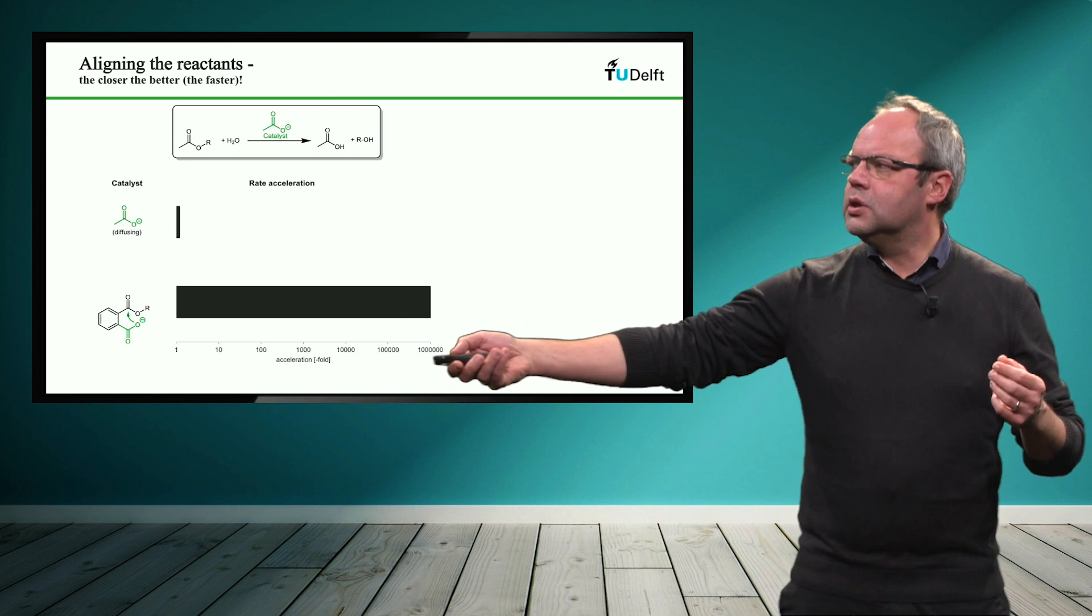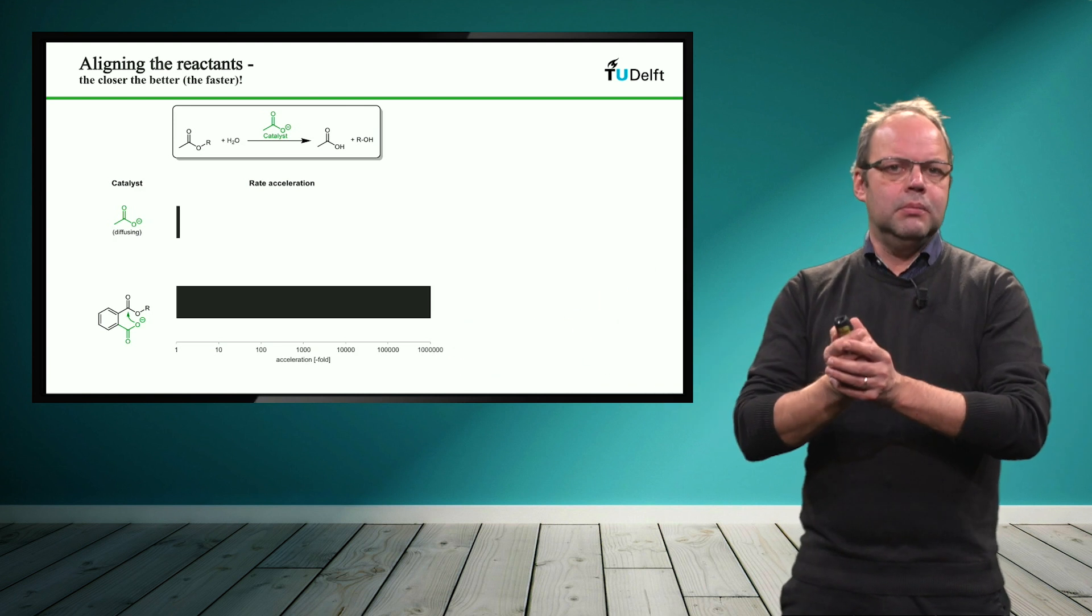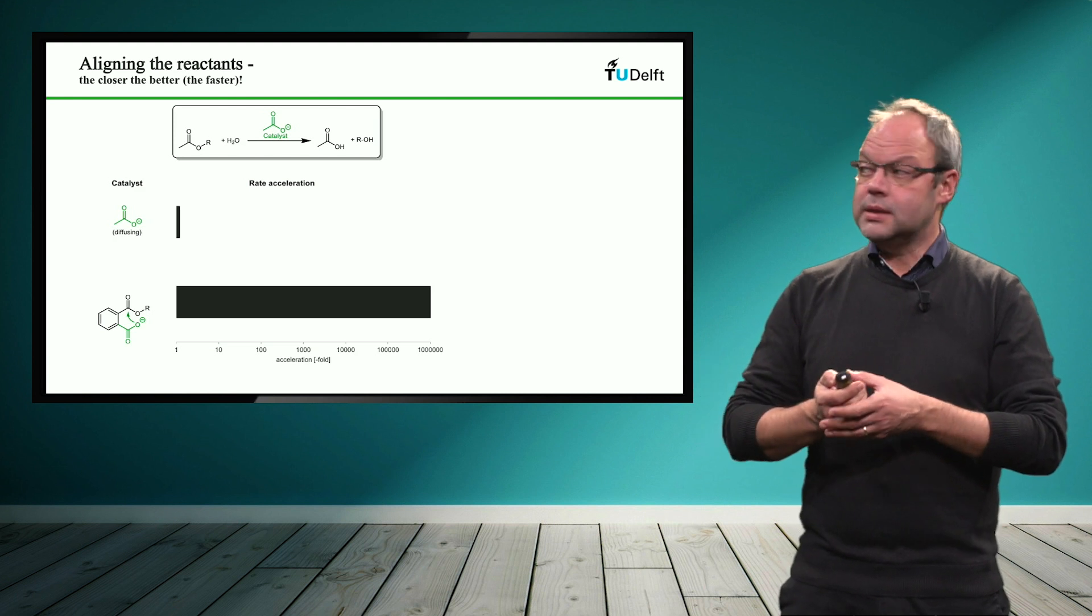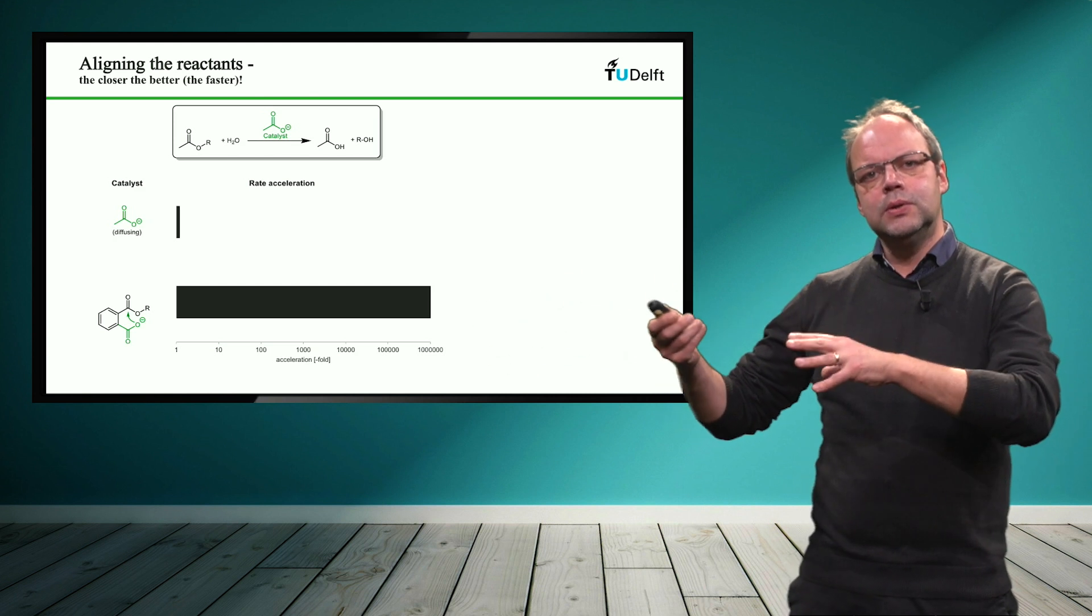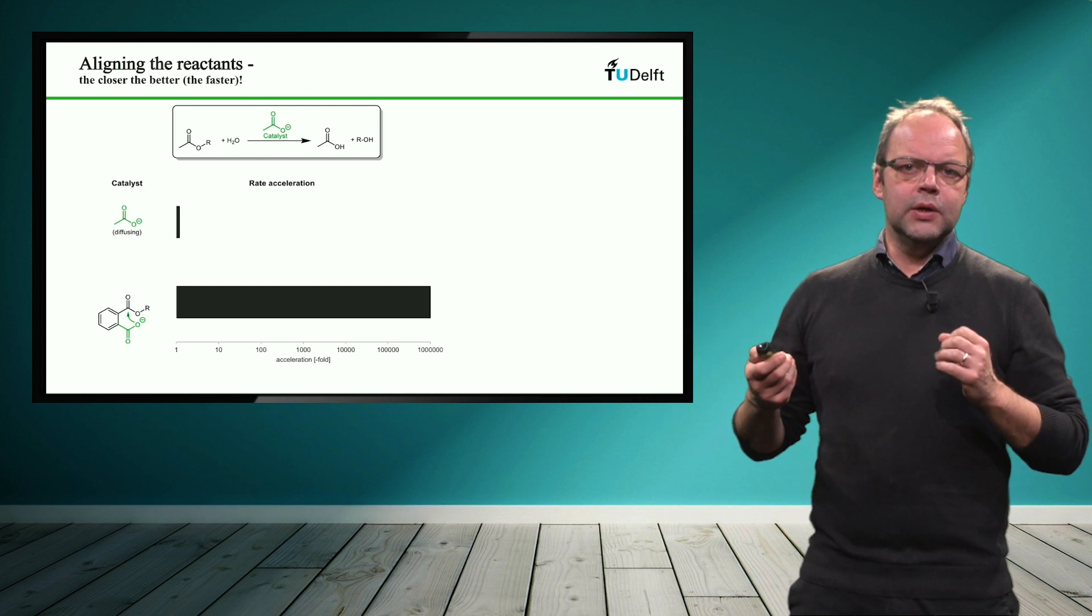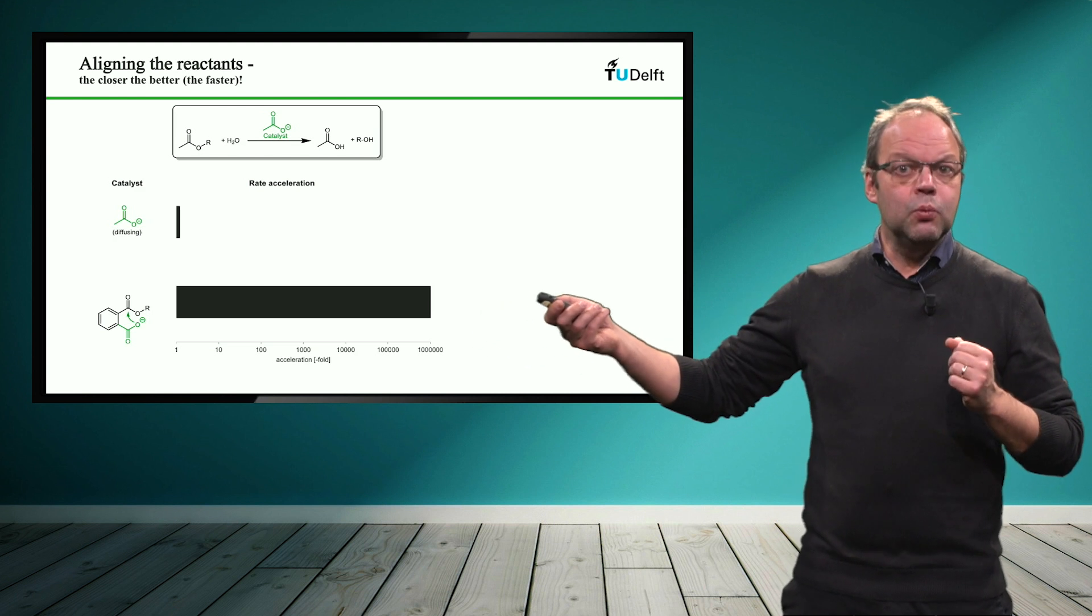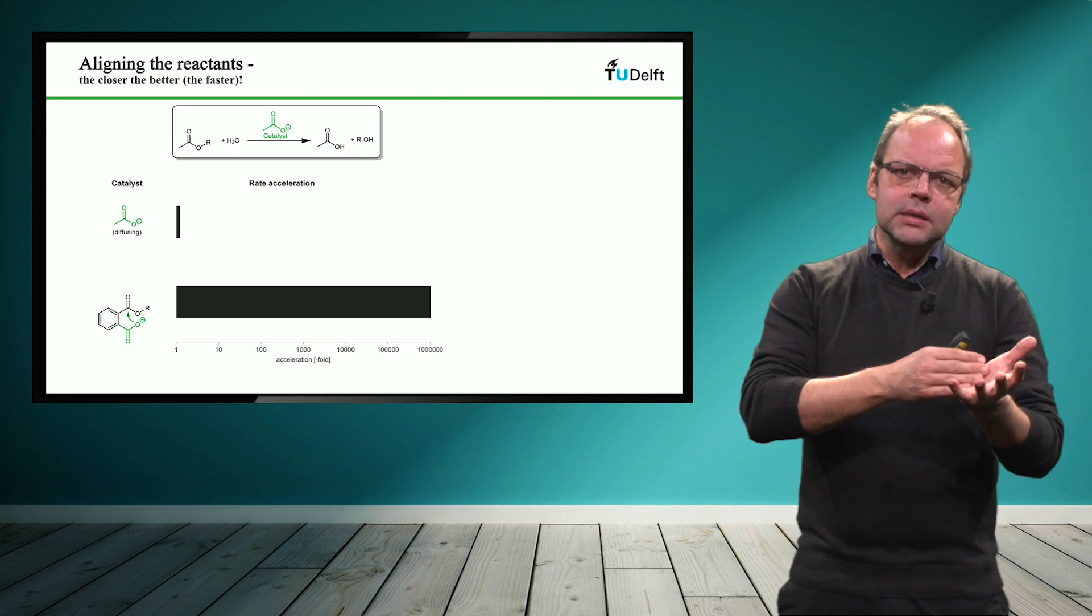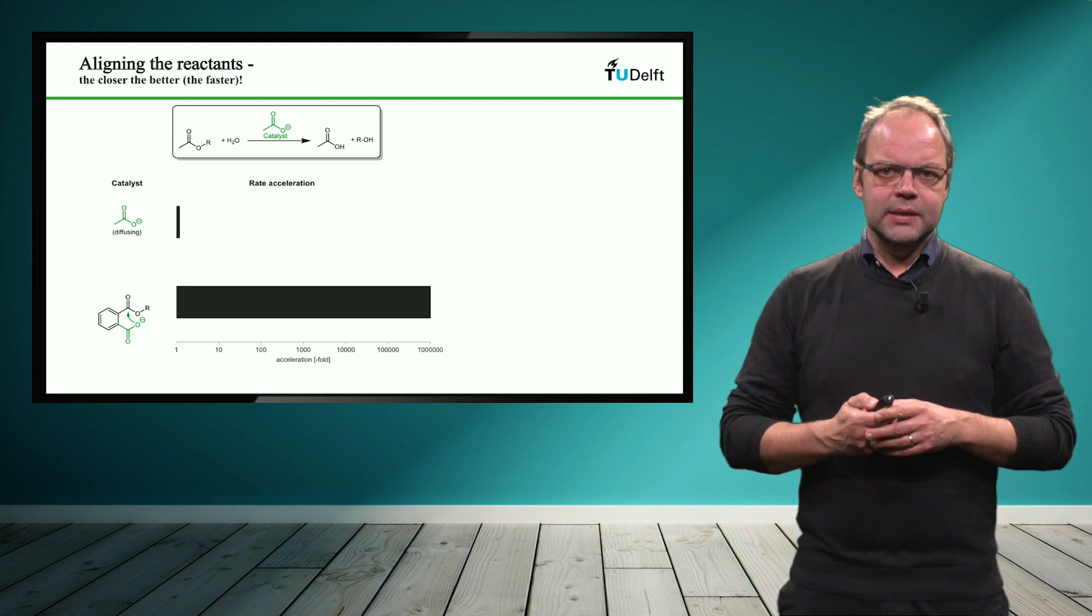So the catalyst, also shown in green below, is very, very close to the reactive site and can catalyze the reaction. And what you see is that simply by covalently linking the catalyst to the molecule, you get a rate acceleration of approximately one million fold. So bringing the catalyst with the reagents in close vicinity is very important to eliminate diffusion limitations. And enzymes actually do this as well.